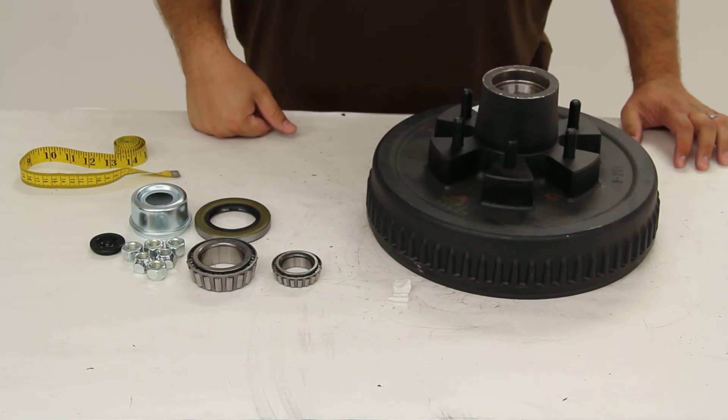And that's it for Dexter Axle's Trailer Hub and Drum Assembly, part number 8-201-5UC3-EZ.